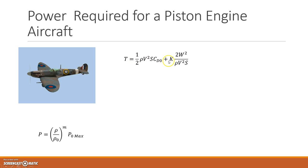We know thrust is equal to drag, and drag is CD0 plus KCL squared, so I can write that the thrust is equal to the drag which is half rho V squared S, CD0 plus K times 2W squared over rho V squared S. That's the standard equation we've used a couple of times.